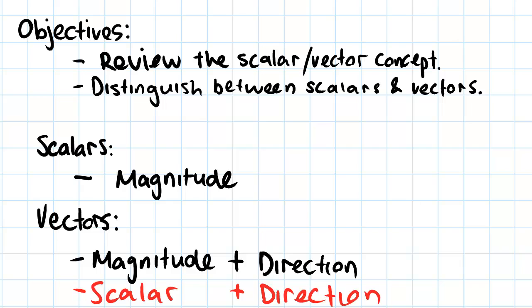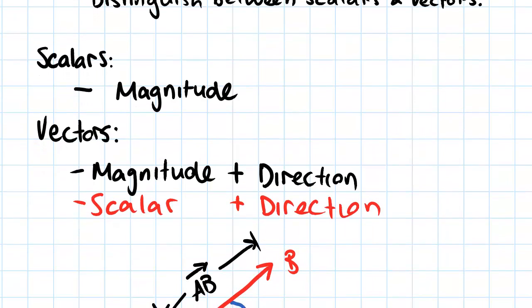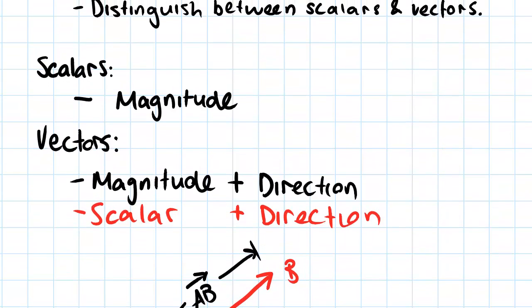So we'll start off by just having a look at scalars and vectors. What I've just got written here are the basic definitions of scalars and vectors. So a scalar is defined as being a magnitude and a vector is defined as being a magnitude with a direction.